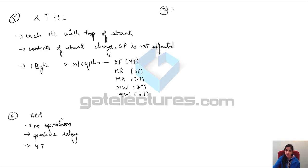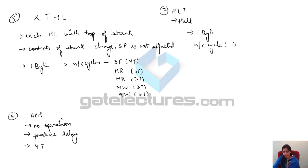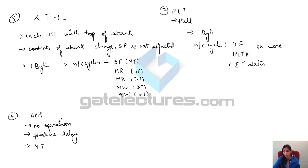Next is NOP — No Operation. This instruction literally does nothing; it performs no operation. We use NOP to produce a delay of 4 T-states. Then we have HLT — Halt — which is placed at the end of every program. HLT is a one-byte long instruction with machine cycles of opcode fetch and halt acknowledgement, taking 5 T-states or more. It signifies the end of the program.